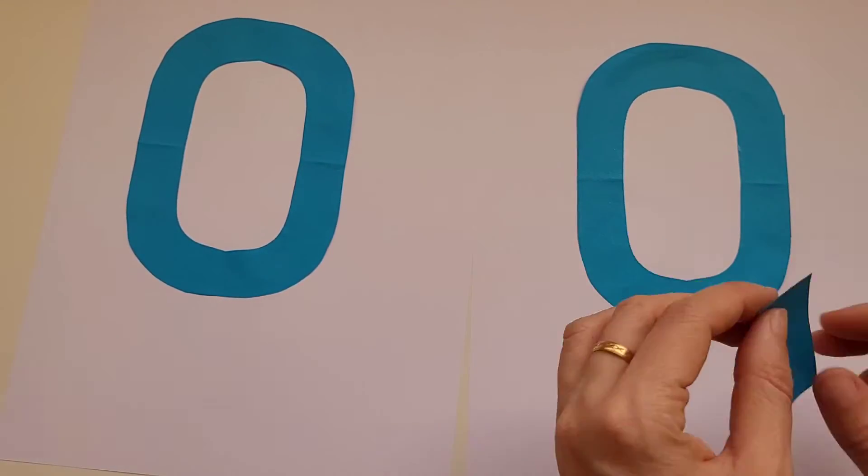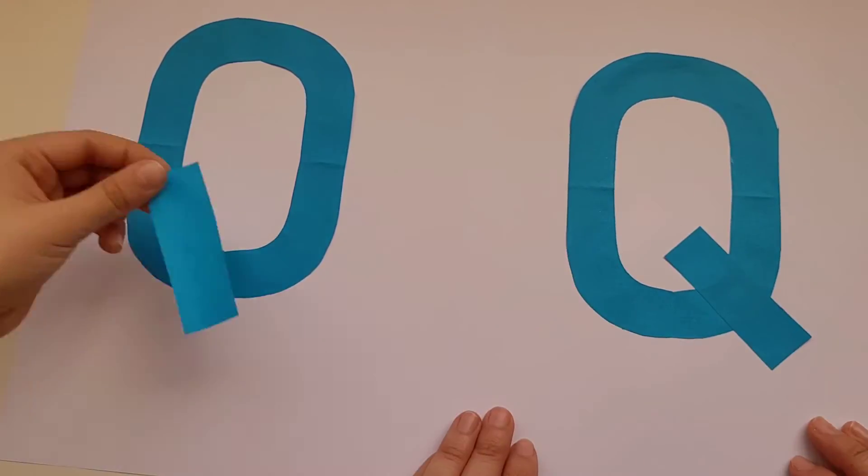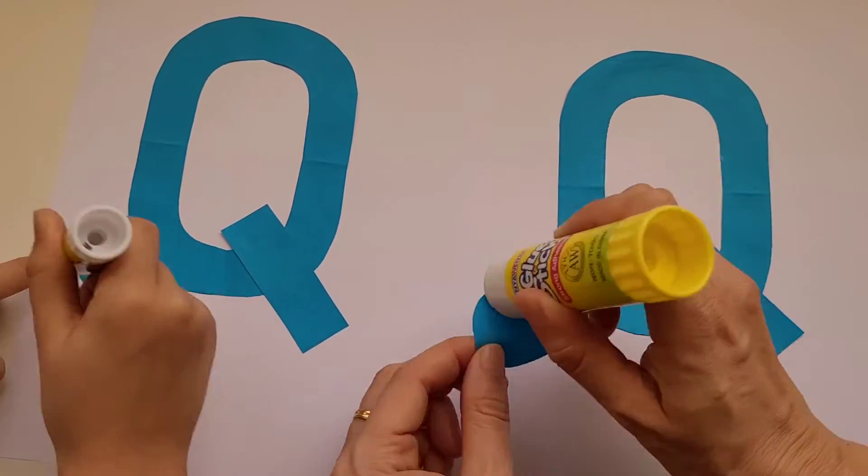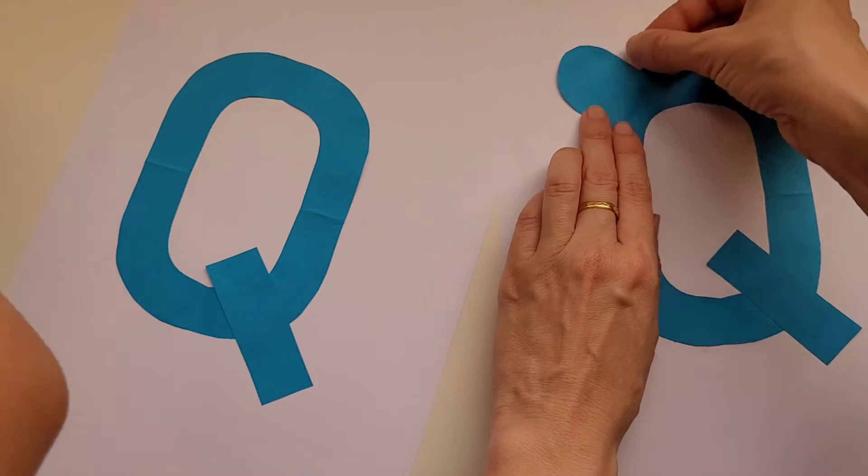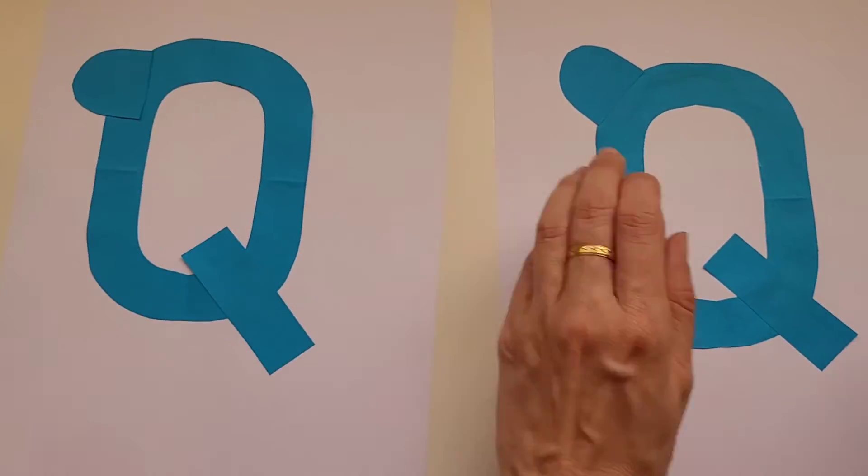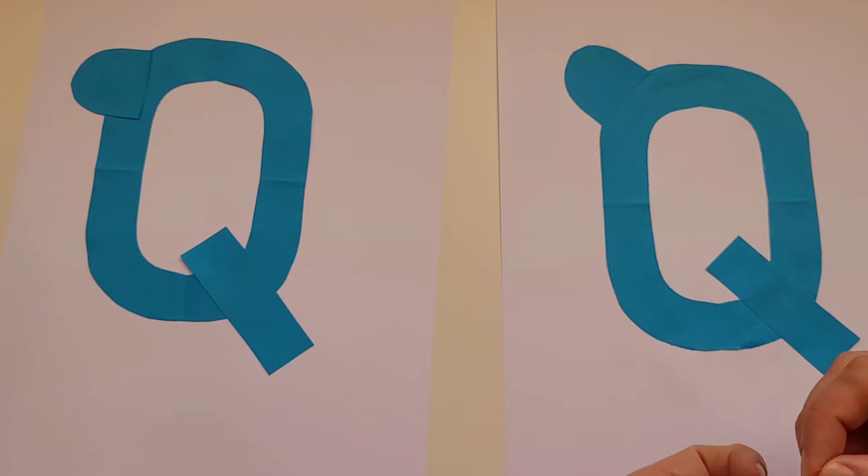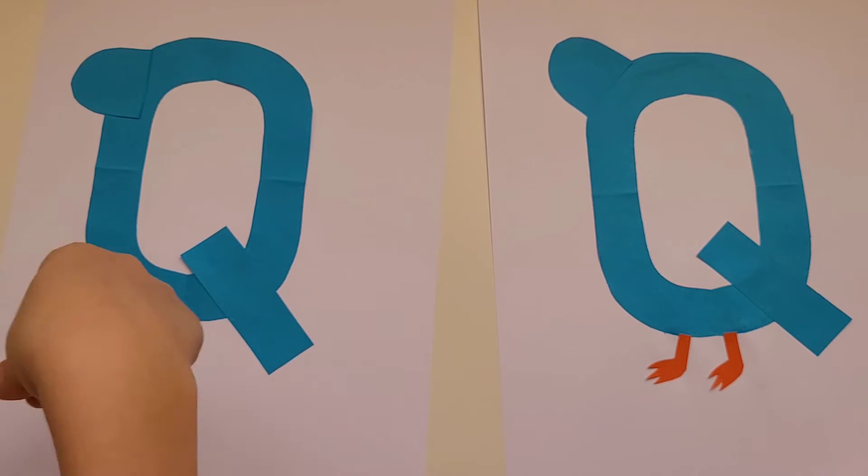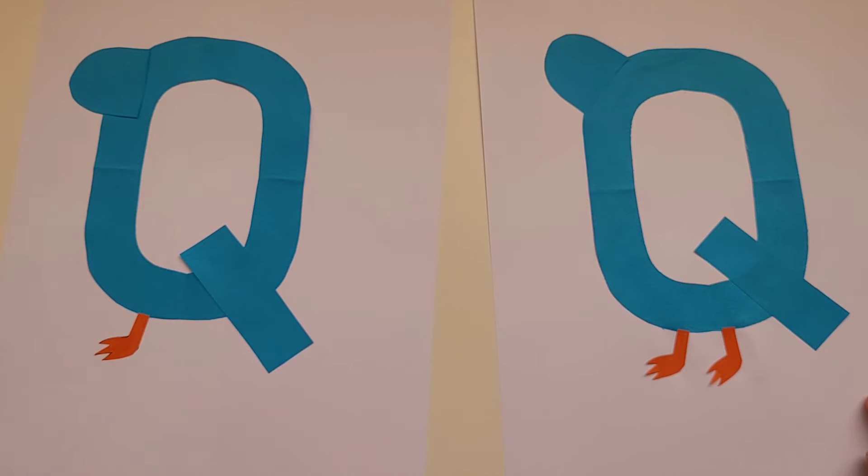Do you know what a quail is? A type of bird. Very good. To make this craft, we're going to start out by sticking the letter Q in the middle of the page. Then we're going to add the head and then the legs, the eyes, and the beak.